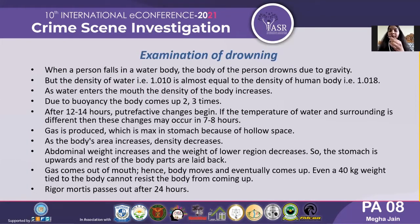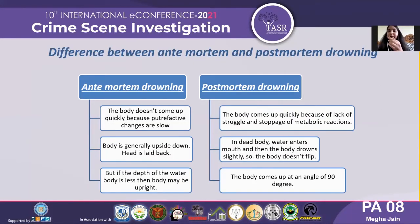Even a 40 kg weight tied to the body cannot resist the body from coming up. Rigor mortis passes out after 24 hours. The differences between ante-mortem and post-mortem drowning are listed below. In ante-mortem drowning, the body doesn't come up quickly because putrefactive changes are slow. The body is generally upside down and the head is laid backwards, but if the depth of the water body is less, the body may be upright. In post-mortem drowning, the body comes up quickly because of lack of struggle and stoppage of activities. Water enters the mouth and the body drowns slightly, so the body doesn't flip. The body comes up at an angle of almost 90 degrees.